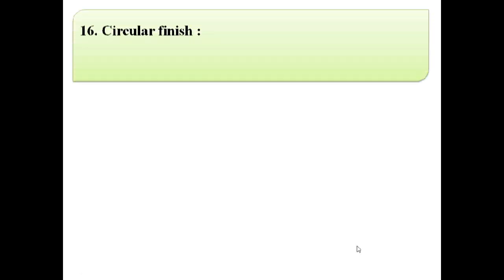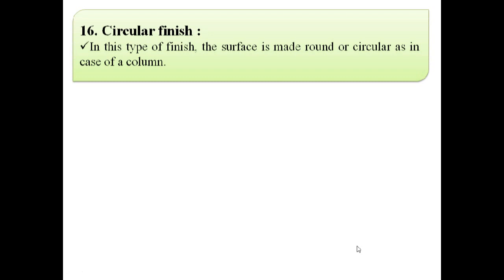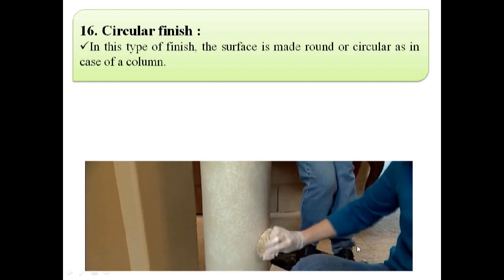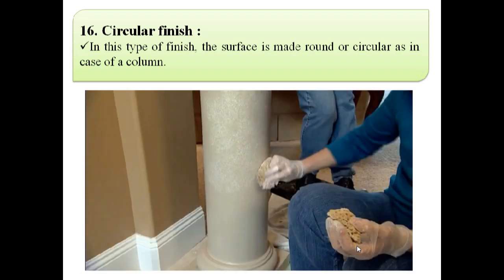The next finish is circular finish. In this type of finish, the surface is made round or circular, as in the case of a column, as shown in this image.